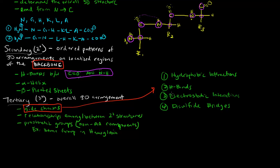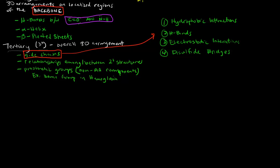I'll have videos specifically for secondary structure and tertiary structure because they're far more complex than I can cover here. But this is a brief introduction. The last thing I want to mention is quaternary structure. Quite simply, if there's more than one polypeptide chain involved in the protein, then the level you've reached is quaternary structure — multiple polypeptide chains interacting.